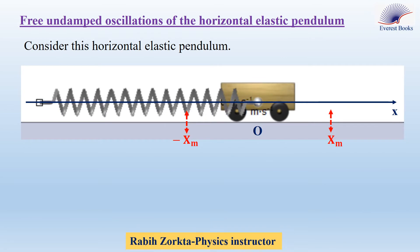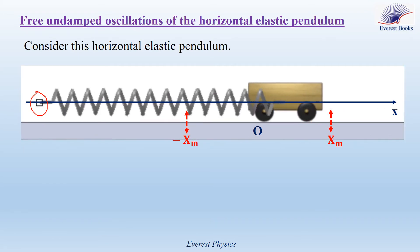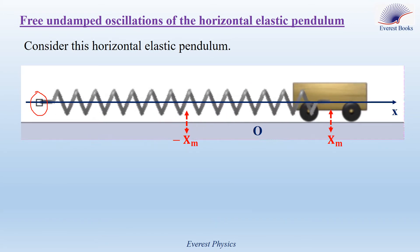Pre-undamped oscillation of the horizontal elastic pendulum. Consider this horizontal elastic pendulum, where a horizontal spring is fixed from its left hand to a fixed support, whereas its right hand is connected to a cart. To start the oscillatory motion, let's displace the cart by a displacement Xm, and then it is released from rest. So the oscillatory motion starts.